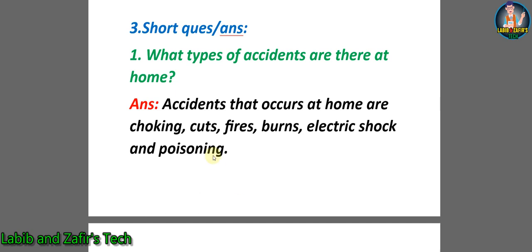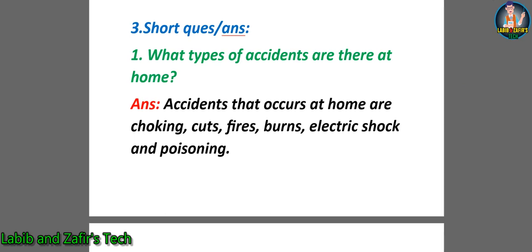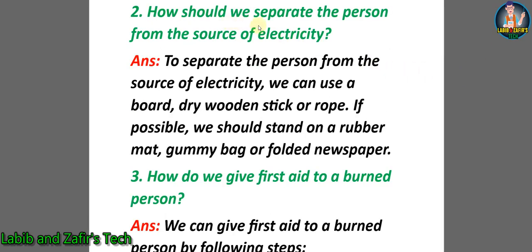Now students, let's go through some short question answers. Number one: What type of accidents are there at home? Answer: Accidents that occur at home are choking, cars, fires, burns, electric shock, and poisoning.